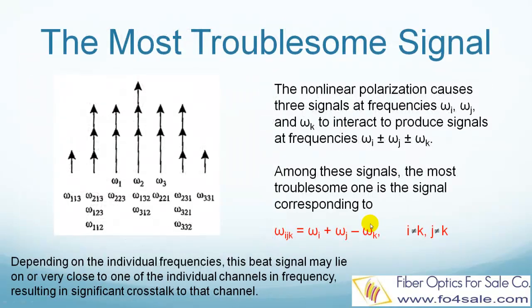Among all the 4-wave mixing signals, the most troublesome one is the signal corresponding to ωi + ωj - ωk. This is because, depending on the individual frequencies, ωi + ωj - ωk may lie on or very close to one of the actual channels, causing significant crosstalk to that channel, as shown by ω223, ω132, ω312, and ω221.